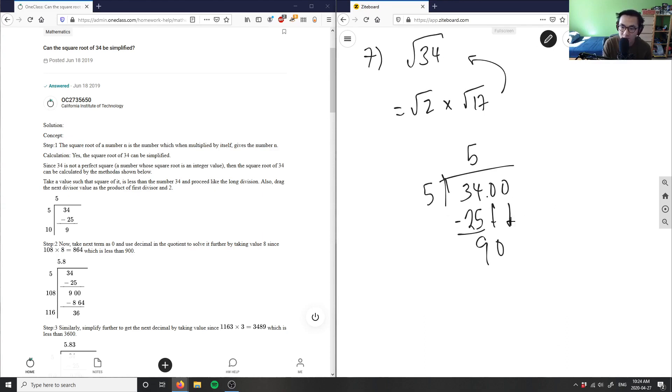I can bring down zeros. Step 2 says now take the next term as 0 and use decimal in the quotient to solve it further by taking the value of 8, since 108 times 8 equals 864, which is less than 900. I'm just figuring out where they're getting 108 here.